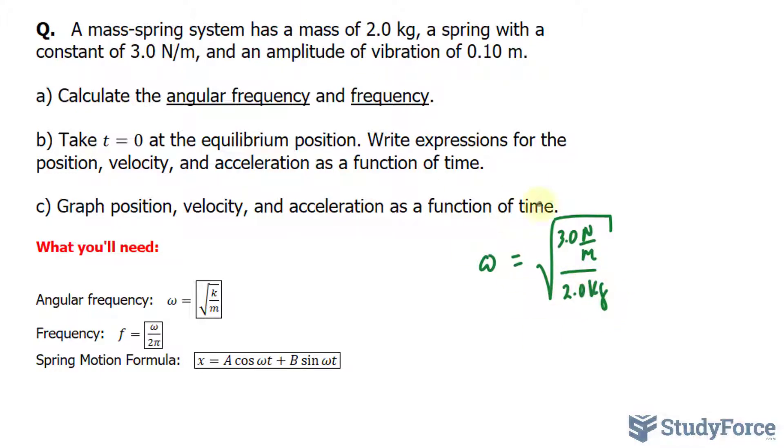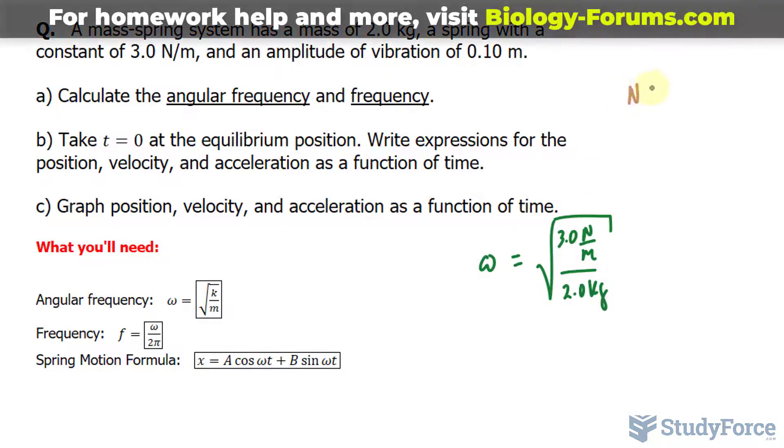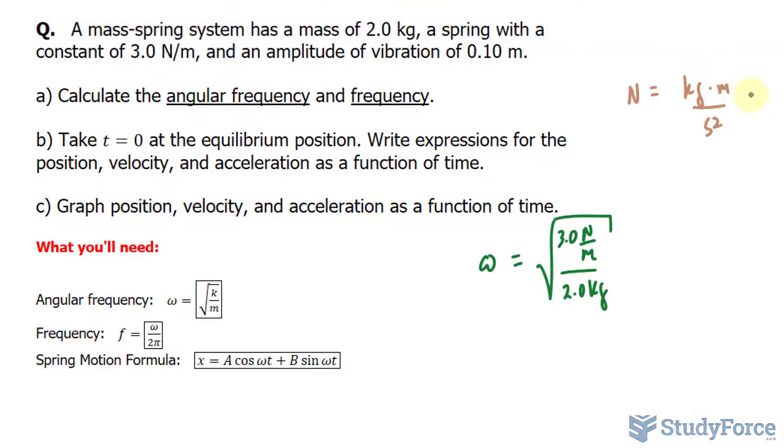Now before I show you the calculation, you just plug it into your calculator. Remember, newtons is the same thing as kilograms times meters per second squared. That's being divided by meters. So it's like placing meters underneath here, and this unit and that unit will cancel out. In addition, we have 2.0 kilograms, so that unit will cancel out.